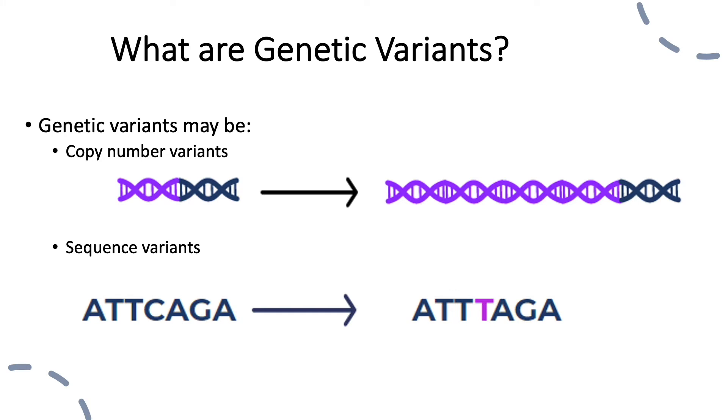Genetic variants are changes in our genetic material, our DNA. There are two main categories of genetic variants: copy number variants and sequence variants.